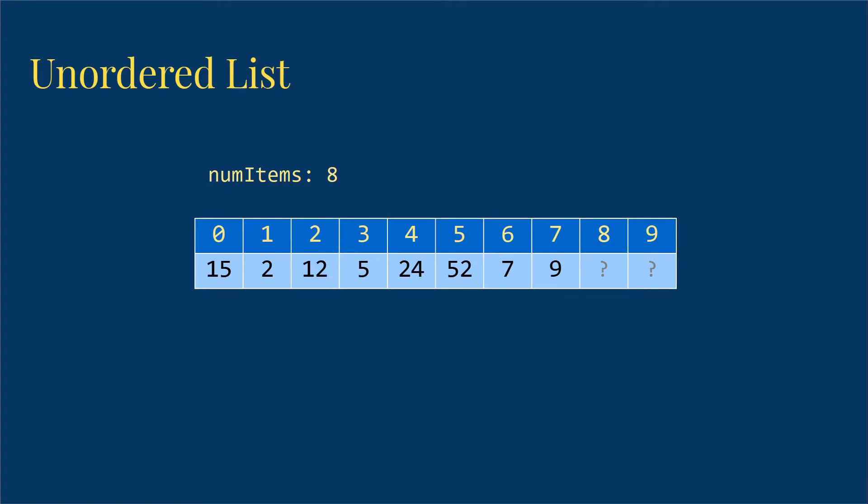Note that index 8 and index 9 do have integer values in them, but we don't know what those values are because they're not part of our list.